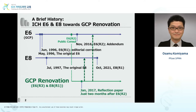The ICH GCP was amended in 2016 as E6R2. E6R2 added the perspective of increasing the efficiency of the conduct of clinical trials, taking into account the increasing digitalization of data and the increasing complexity of trial designs, without compromising scientific and ethical integrity. The amendment to chapter 5 in ICH E6R2, describing the responsibility of sponsors, recommended implementing a quality management system and using a risk-based approach.